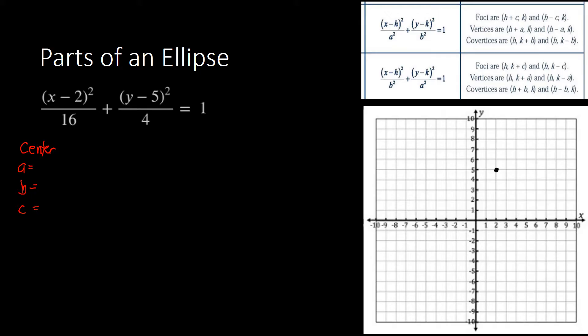So we will be using the horizontal standard equation formula. Since we have x minus 2, that corresponds to x minus h, so h equals 2. And since we have y minus 5, k equals 5. So the center is (2, 5). Once we have the center we are ready to identify a, b, and c.